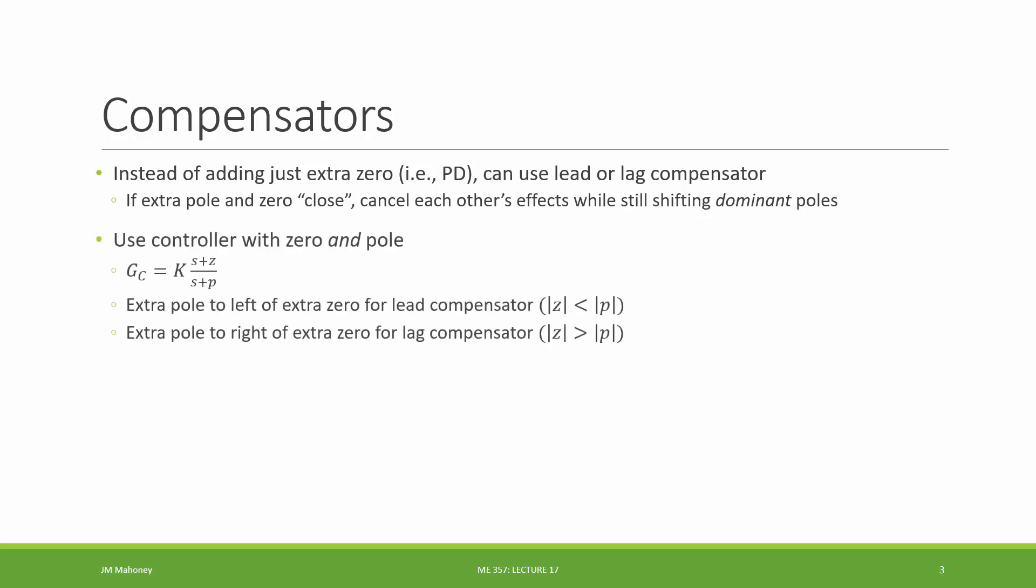So the controller is going to look in this form: we are going to still choose some gain times an s plus zc over s plus pc. We're going to select a zero and a pole and use that to make a root locus to find the proper gain for our system in order to get the dominant poles we would like.